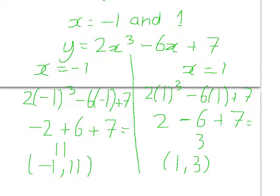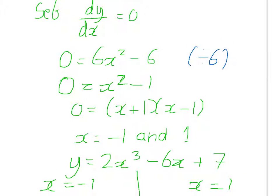There are two coordinates where the gradient of the curve is equal to 0. And you could check that if you wanted to by now substituting minus 1 and 1 into dy by dx to check it's equal to 0.